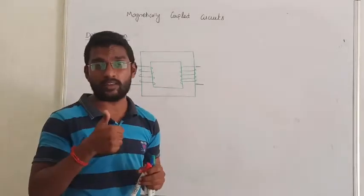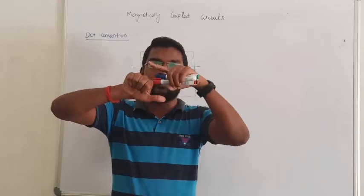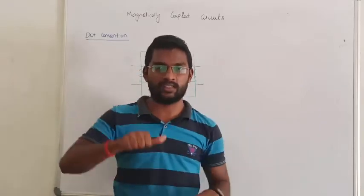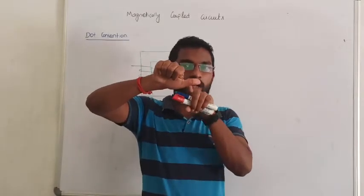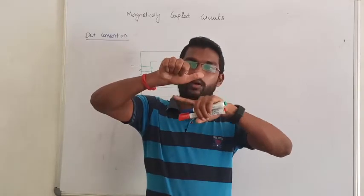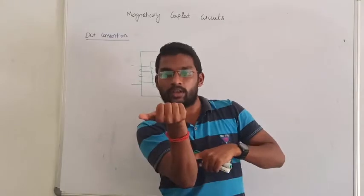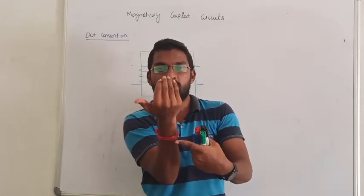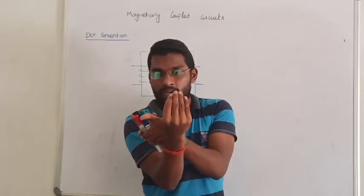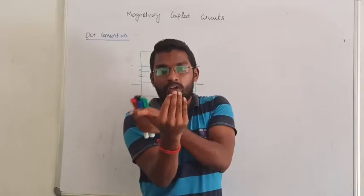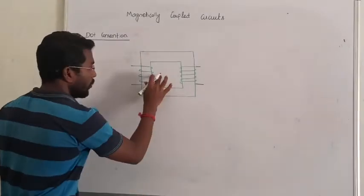We are going to use the right-hand thumb rule. The right-hand thumb rule: my thumb indicates the direction of the current, whereas the rest of my fingers indicate the direction of the flux. If the current is going upward, the flux rotates accordingly. So the direction of the current on the left gives flux upward; current going right gives flux downward. This is the right-hand thumb rule.